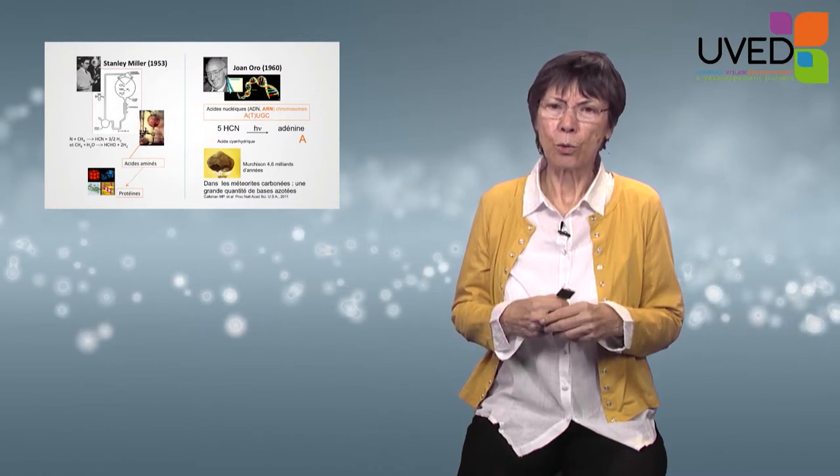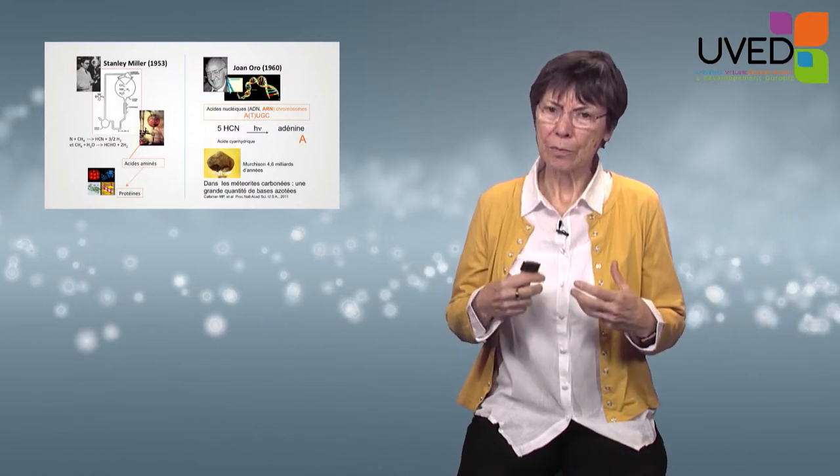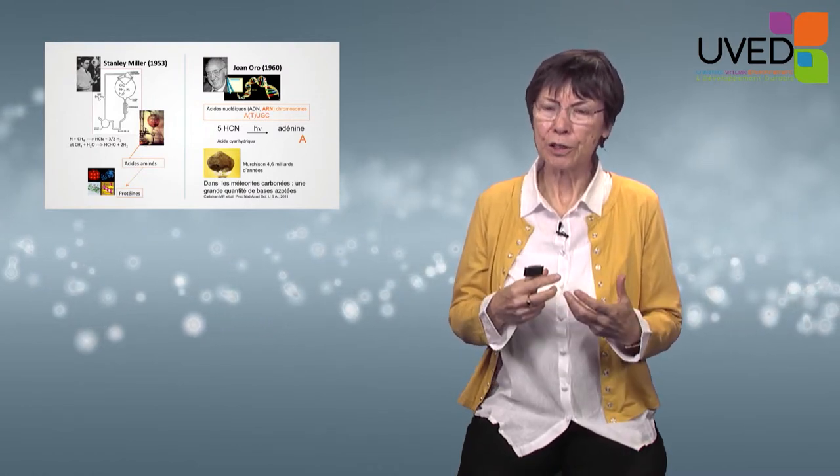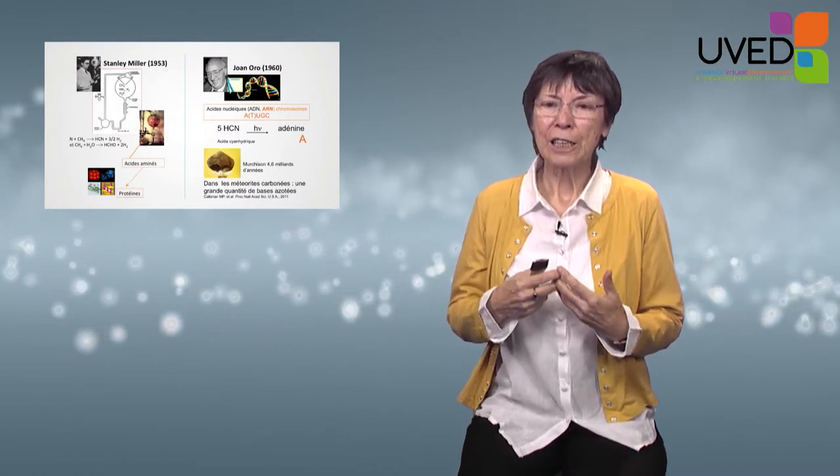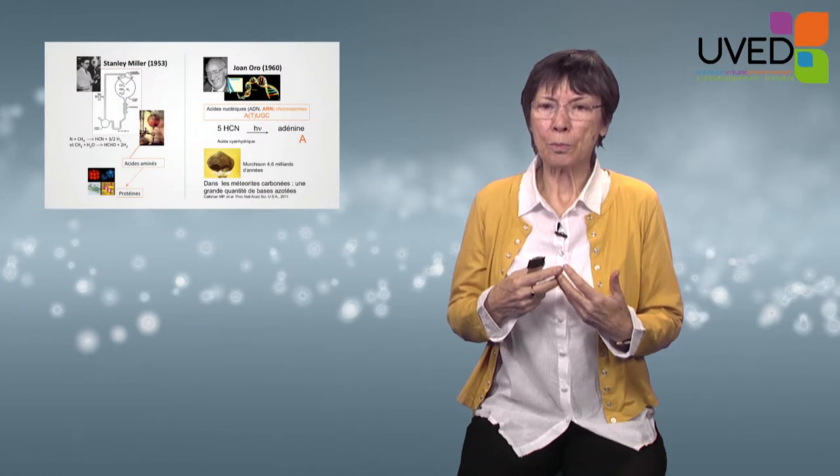The L-shaped bacteria are capable of budding in order to release offspring that look like droplets, exactly like coacervates, as shown in the picture. Stanley Miller, in 1953, rose to the challenge.